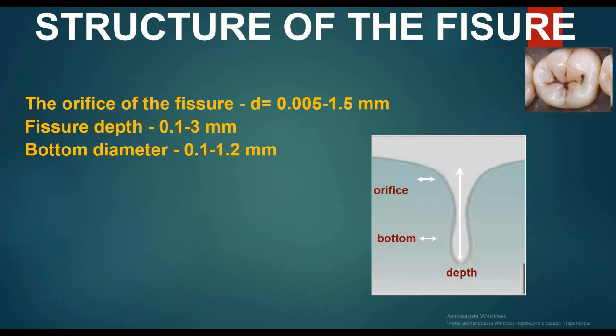Structure of the fissures: the orifice diameter ranges from 0.005 to 1.5 mm, fissure depth is about 0.1 to 3 mm, and bottom diameter is 0.1 to 1.2 mm. In the picture we see the orifice, bottom, and depth of the fissures.